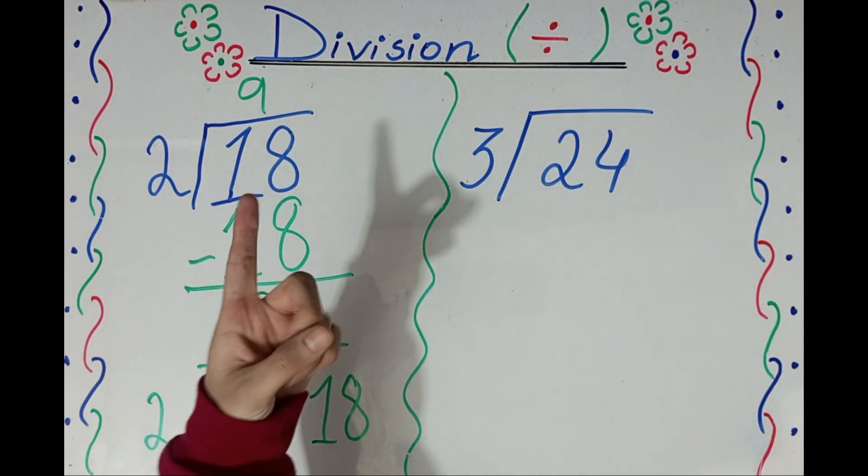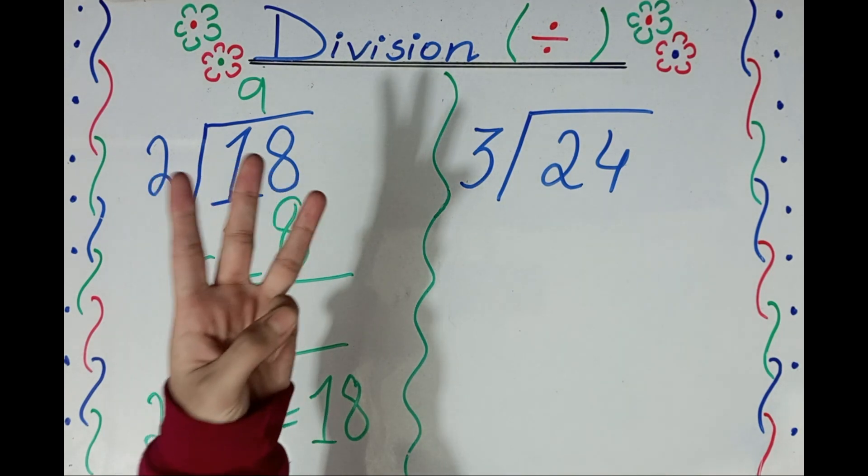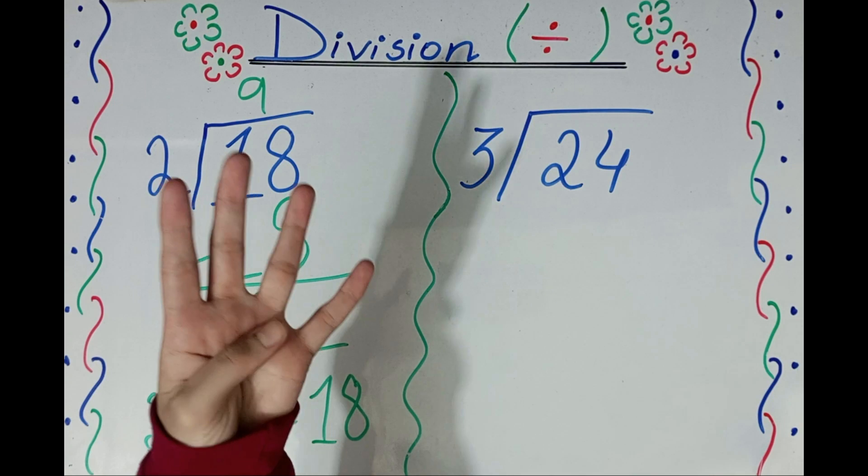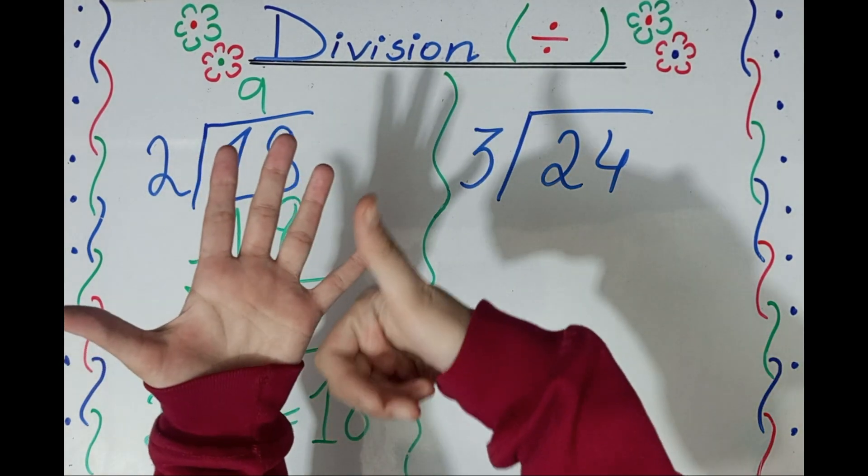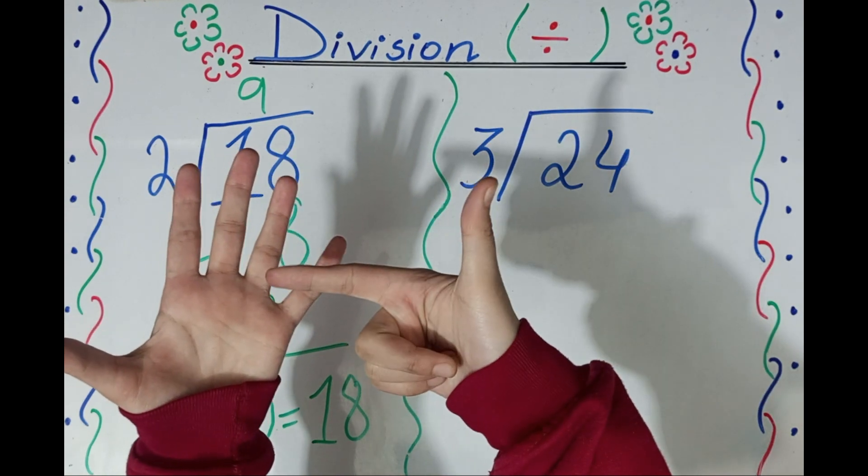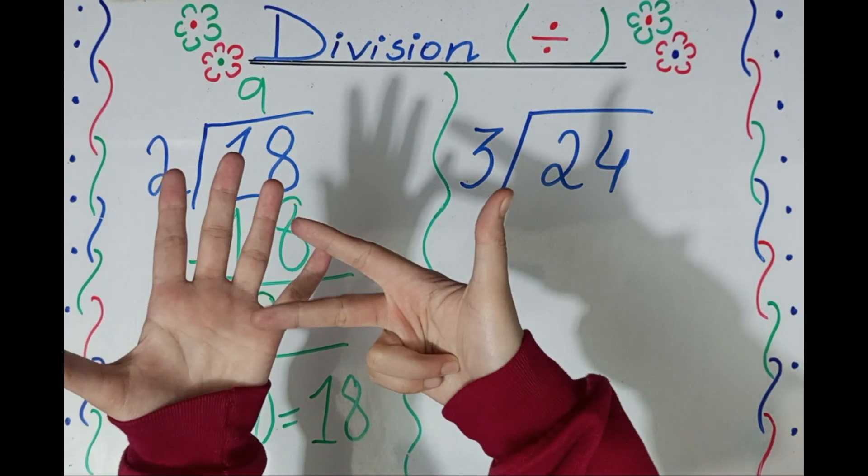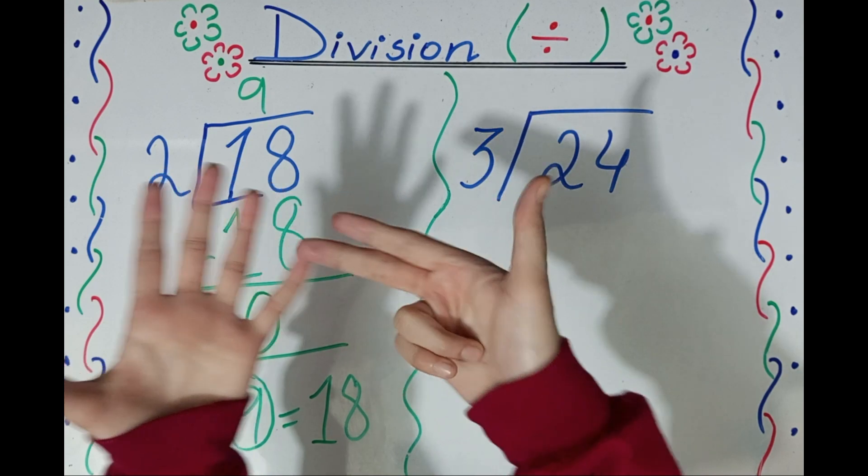3 ones are 3, 3 twos are 6, 3 threes are 9, 3 fours are 12, 3 fives are 15, 3 sixes are 18, 3 sevens are 21, 3 eights are 24. 3 eights are 24.